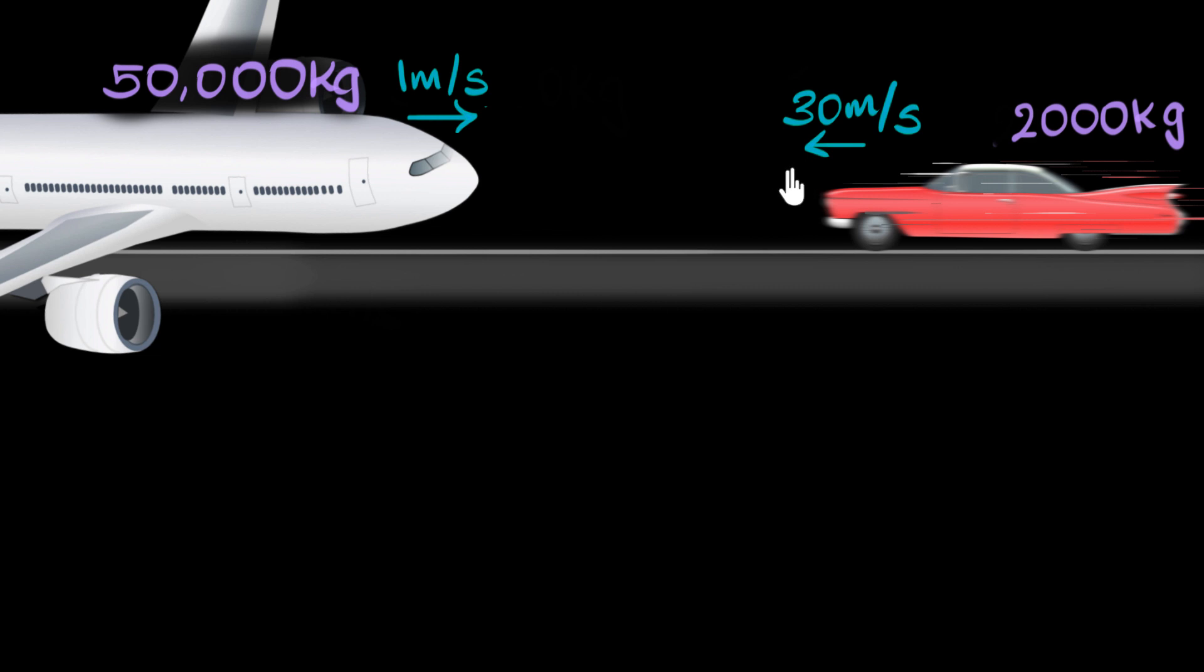And so it turns out that in reality, the effort needed depends on the product of the mass and the velocity. So, we come up with a new quantity for this purpose, where we multiply the mass of that object with the velocity of that object. It's this number that tells us how much effort is needed to stop that object. And we give a name to this number. We call this momentum.